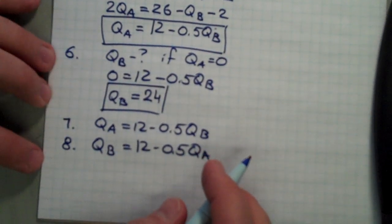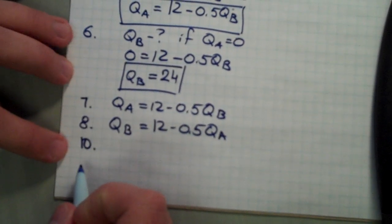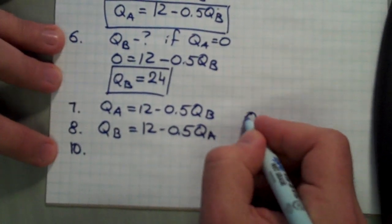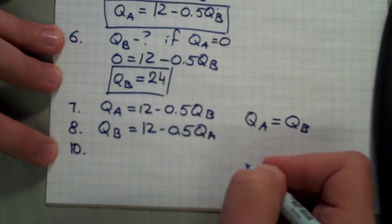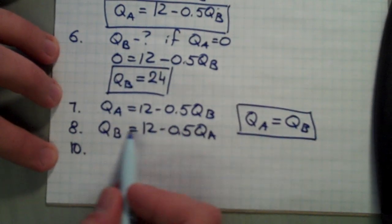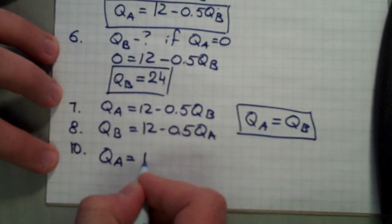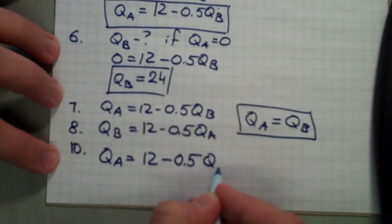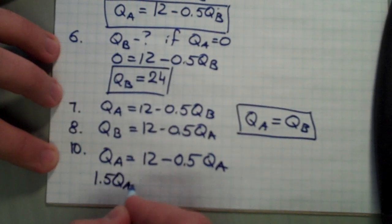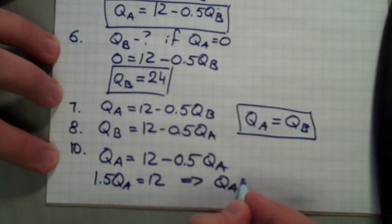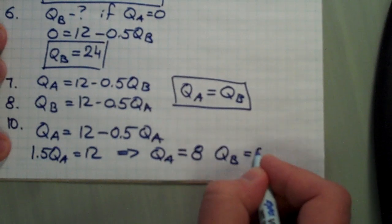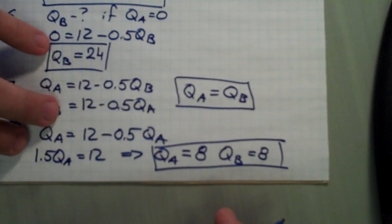Skipping question nine — we can do the drawings at the end. For question ten, the calculation of equilibrium quantity: since both firms are identical in every respect, we can safely assume that in Cournot equilibrium QA equals QB. Taking firm A's reaction function: QA equals 12 minus 0.5QA. Carrying the QA term over: 1.5QA equals 12, which gives QA equals 8. Since QB equals QA, QB is also equal to 8.